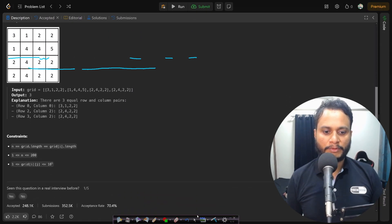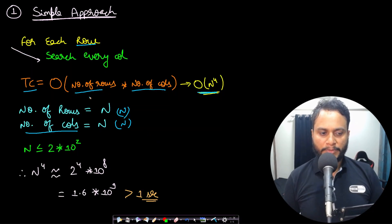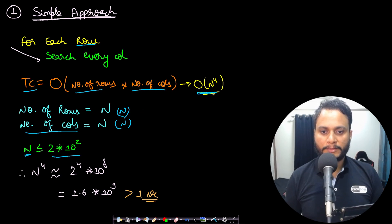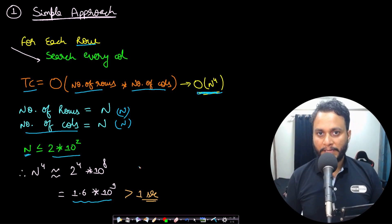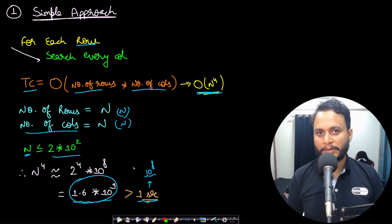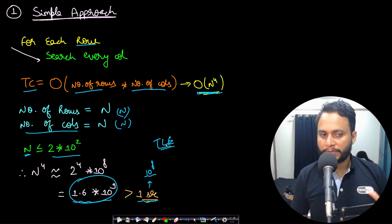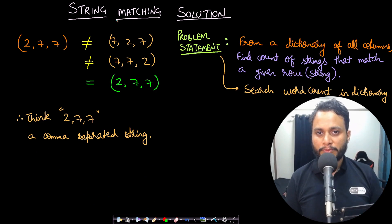If you look at the constraint in the problem, n is less than or equal to 200. Taking the max value n = 200 = 2×10², the time complexity n⁴ gives 1.6×10⁹ operations. To solve within the time limit you need to complete within one second, which is approximately 10⁸ operations. Since 1.6×10⁹ is greater than 10⁸, this simple technique will give you a Time Limit Exceeded. Even without implementing, you can mathematically prove the simple approach doesn't work.